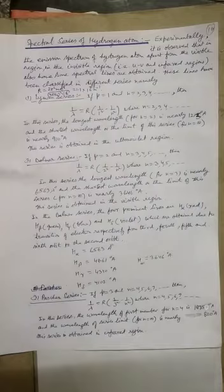It is experimentally observed that in the emission spectrum of the hydrogen atom, apart from the visible region, the spectrum is also visible in the invisible regions, that is UV and infrared regions, and some spectral lines are obtained there. These lines have been classified into different series named Lyman series, Balmer series, Paschen series, Brackett and Pfund series.